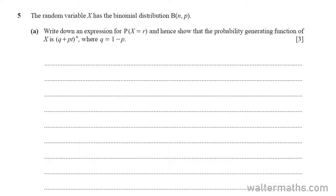The question says: the random variable X has the binomial distribution B of N, P. On part A, write down an expression for the probability that X is equal to R, and hence show that the probability generating function of X is Q plus PT to the power of N, where Q is equal to 1 minus P.